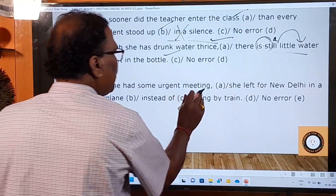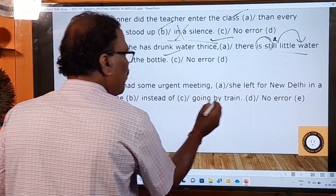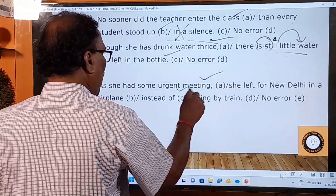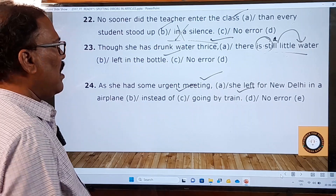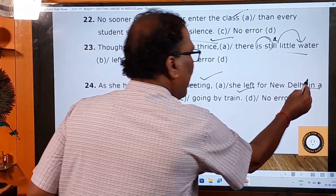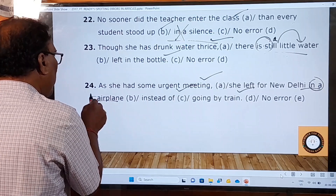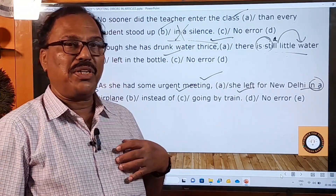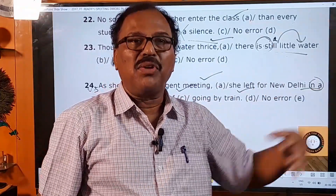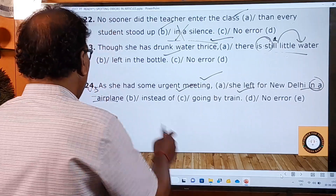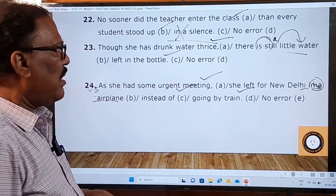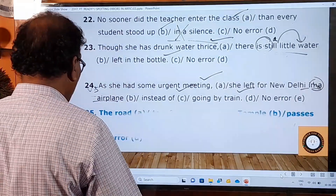Twenty-fourth sentence: 'As she had some urgent meeting, she left for New Delhi in a airplane instead of going by train.' The A, C, and D parts have no mistake. In the B part, 'in a airplane' is a mistake. The word 'airplane' begins with a vowel sound. Before words beginning with a vowel sound we must use 'an', not 'a'. So it should be 'in an airplane'. The article 'a' is wrongly used, so the B part has the grammatical error.